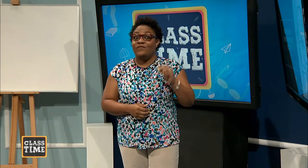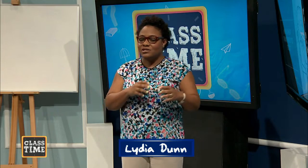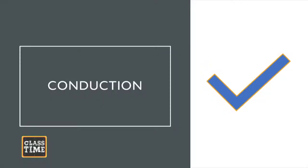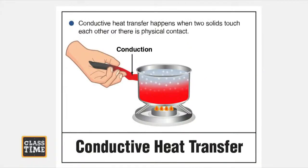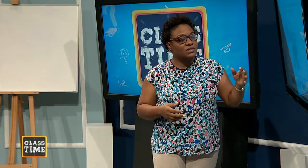That was a very informative video. Now we're going to look at each of these heat transference methods individually to cement what the video showed. Starting with conduction: conductive heat transfer happens when two solids touch each other — there is some physical contact. Once there's some touch on the item, conduction is happening. You can see it with an arm touching the handle of a pot — that is conduction right there.